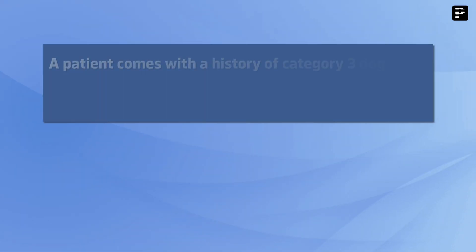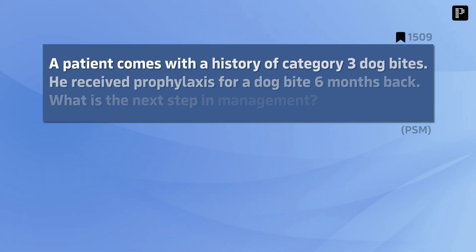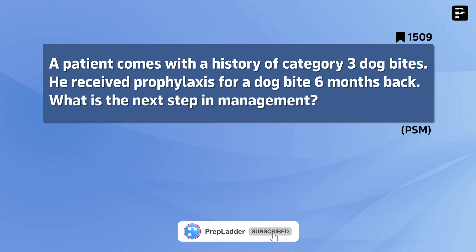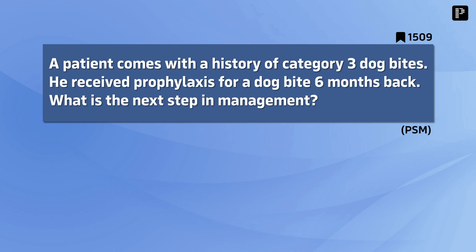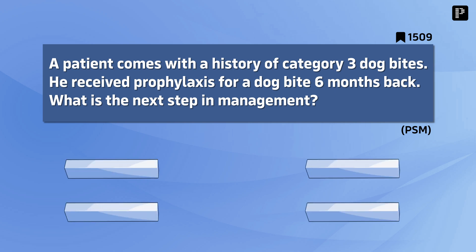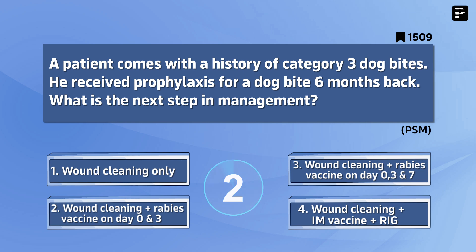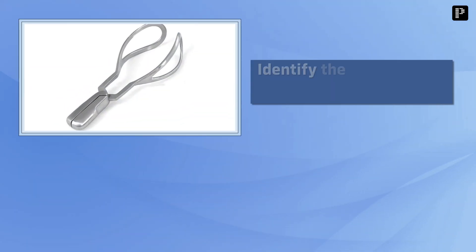Question 6: A patient comes with a history of Category 3 dog bites. He received prophylaxis for a dog bite 6 months back. What is the next step in management? The correct answer is provided.